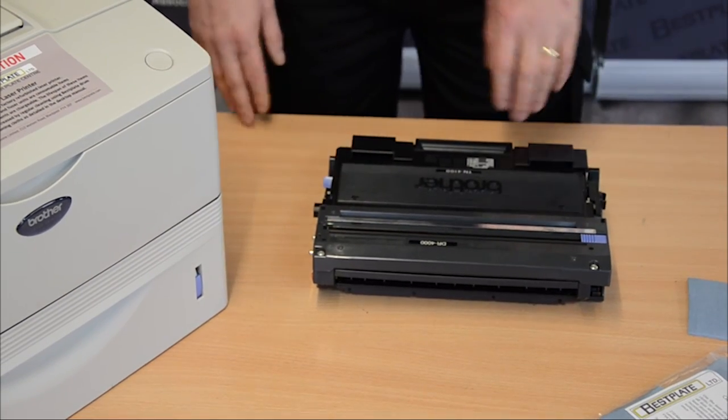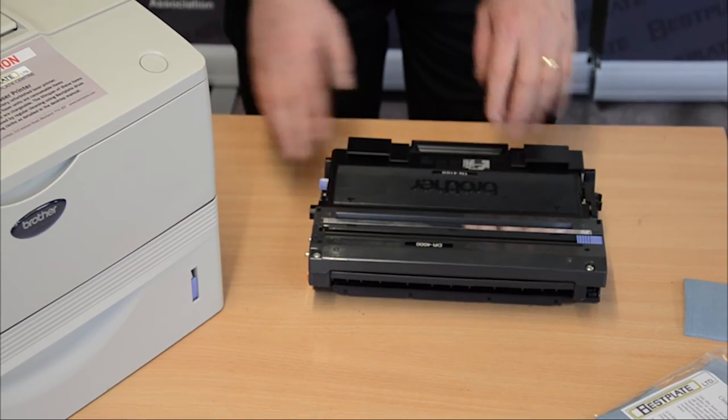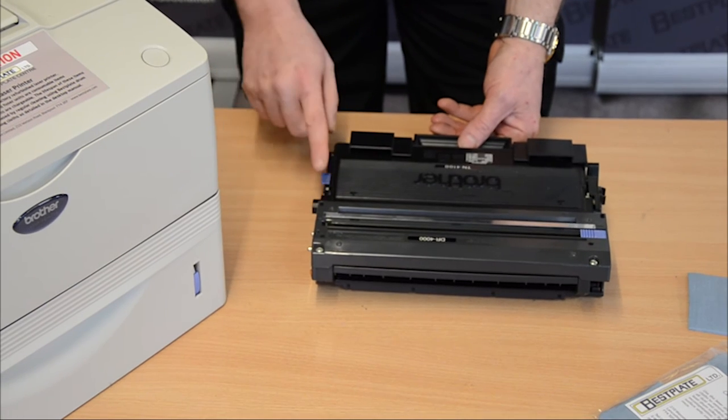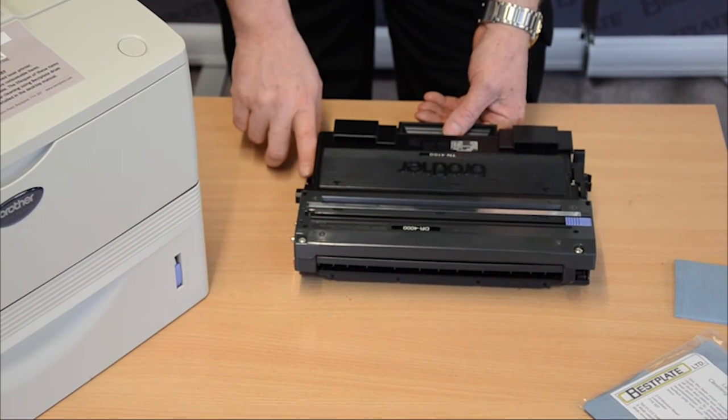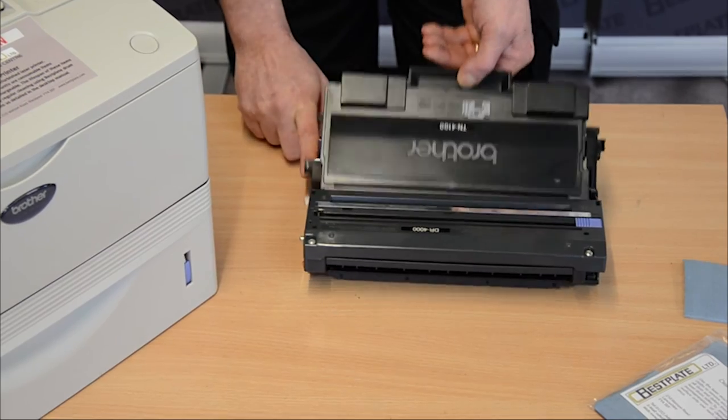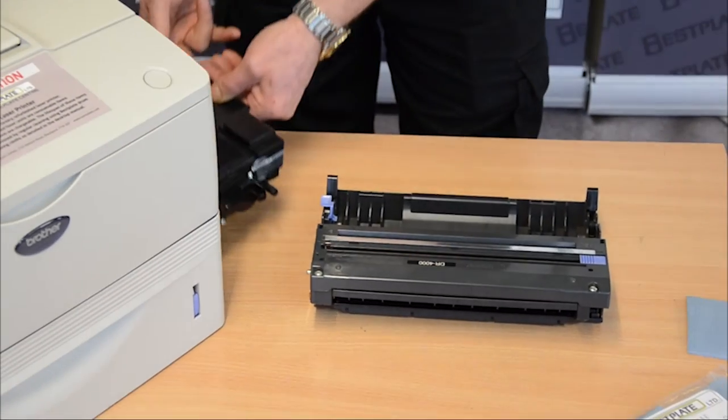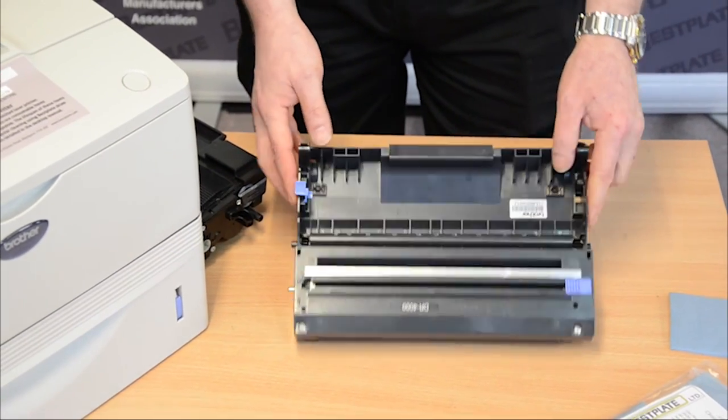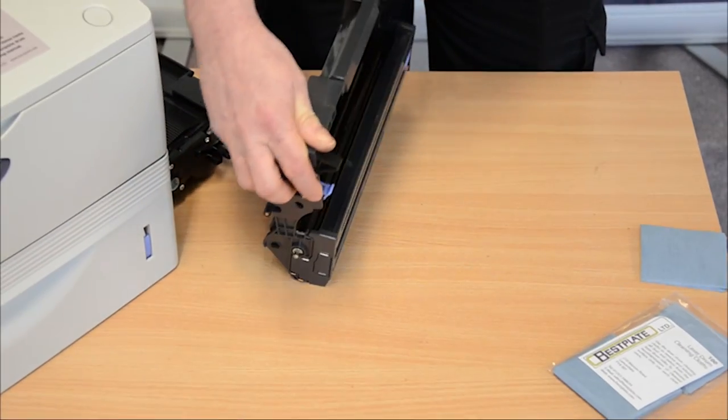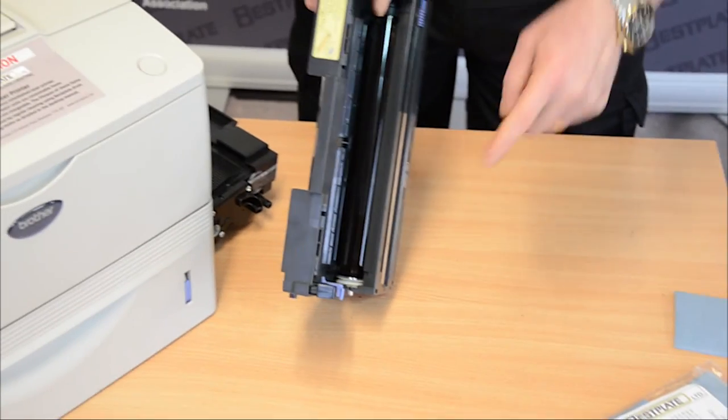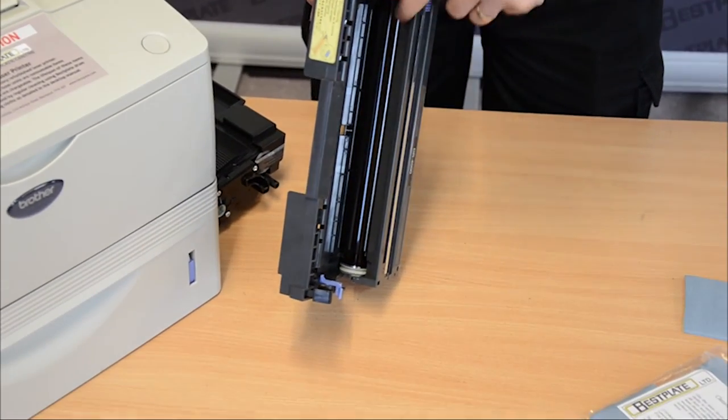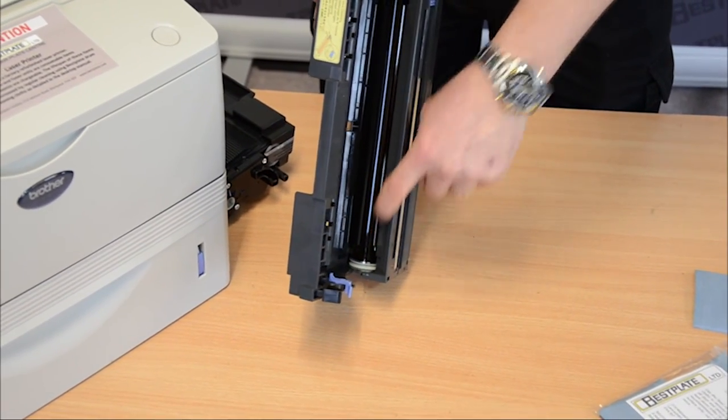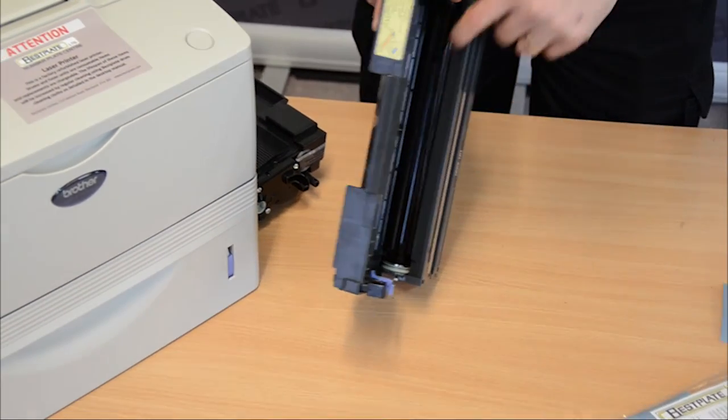Next, we need to remove the toner from the drum by pressing the blue and black levers down towards yourself and lift the toner cartridge up and out. The area on the drum that we need to clean is the photosensitive large roller which is called the drum.